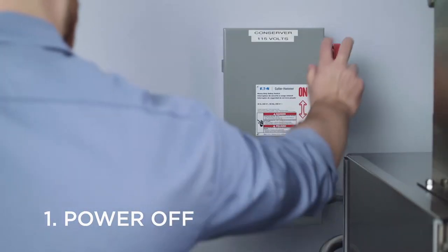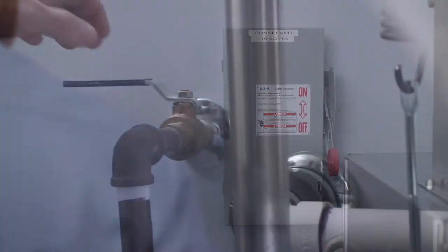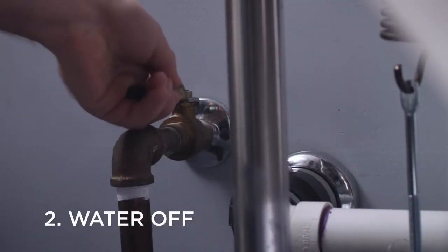First, you'll need to power down the unit by switching off the circuit breaker. Then, close the valve to the water supply line.